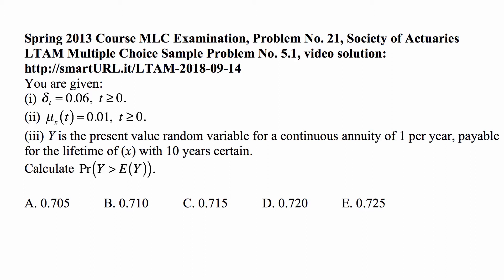Starting from age x, for a person at age x, force of mortality for future ages is 1%. Y is the present value random variable for a continuous annuity of 1 per year, payable for the lifetime of x with 10 years certain. Calculate the probability that Y is greater than E(Y).